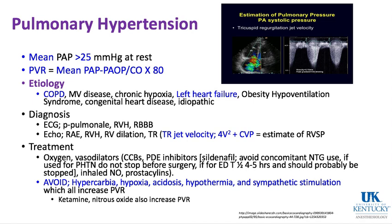If pressures are up in the pulmonary system, the right heart pays the price because it's beating against high resistance, causing chamber enlargement on the right side. Chamber enlargement can pull apart the tricuspid annulus, and if pressure is high in the right ventricle during systole, blood goes backwards through the tricuspid valve, producing a high-velocity tricuspid regurgitation jet.